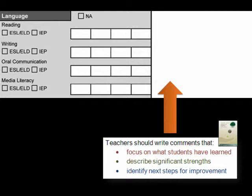Growing Success states that in writing anecdotal comments, teachers should focus on what students have learned, describe significant strengths, and identify next steps for improvement. In addition, the comments should describe in overall terms what students know and can do, and should provide parents with personalized, clear, precise, and meaningful feedback.